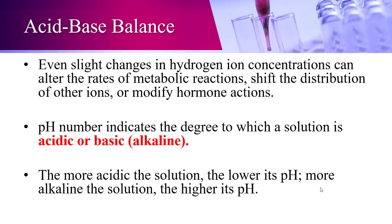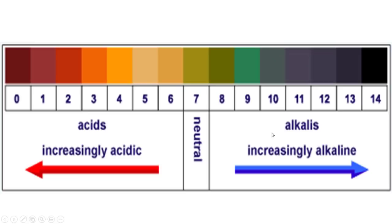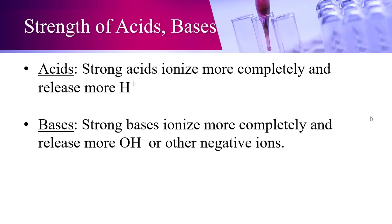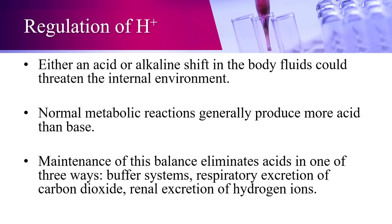On the pH scale, lower numbers are more acidic and higher numbers are more alkaline — distilled water at 7 is a good example of neutral. Stronger acids ionize more completely and release more hydrogen ions; strong bases ionize more completely and release more hydroxide or other negative ions. If a substance releases H⁺ it's an acid; if it releases OH⁻ it's a base.